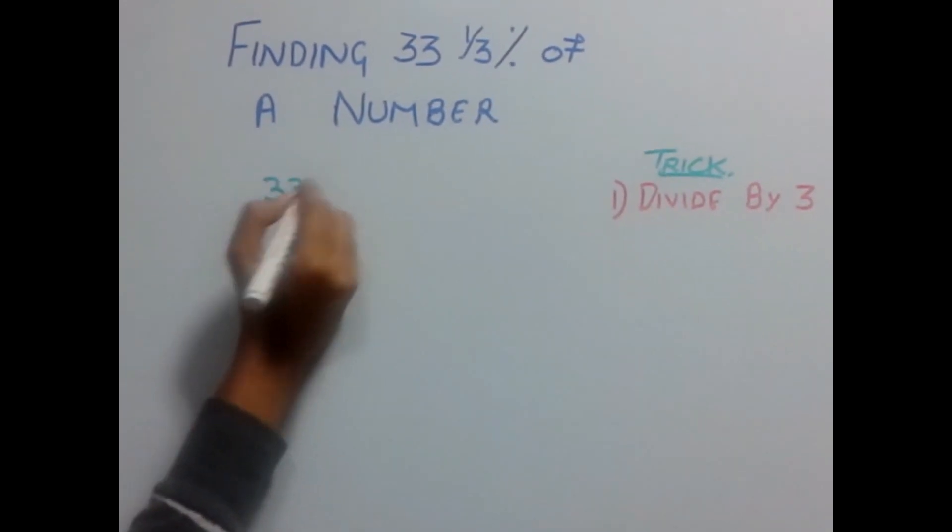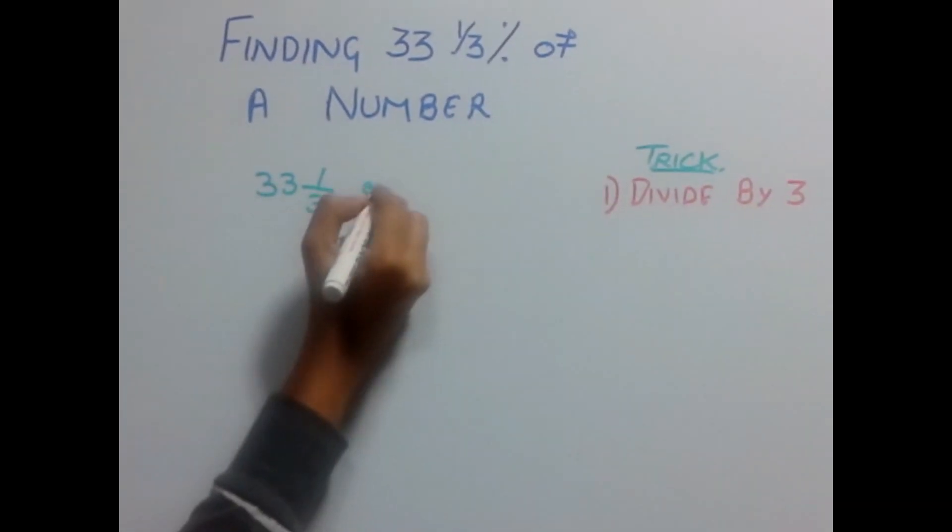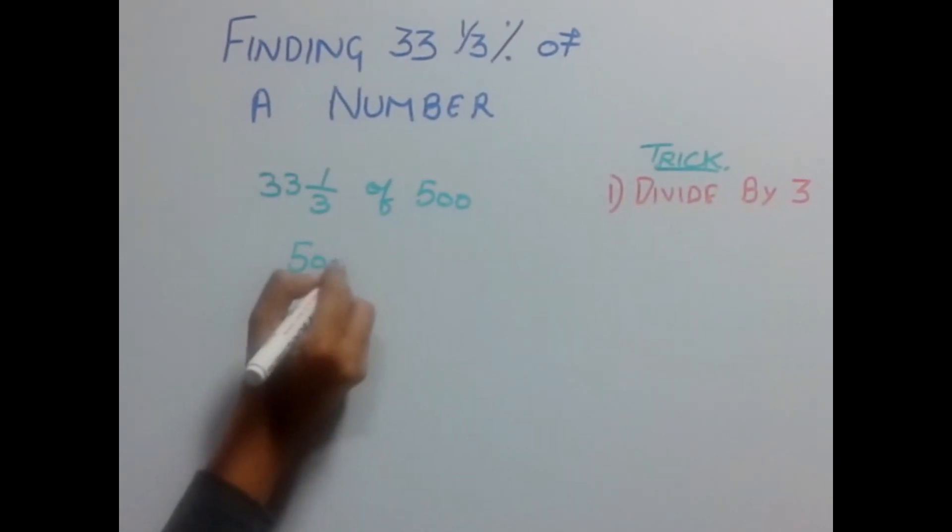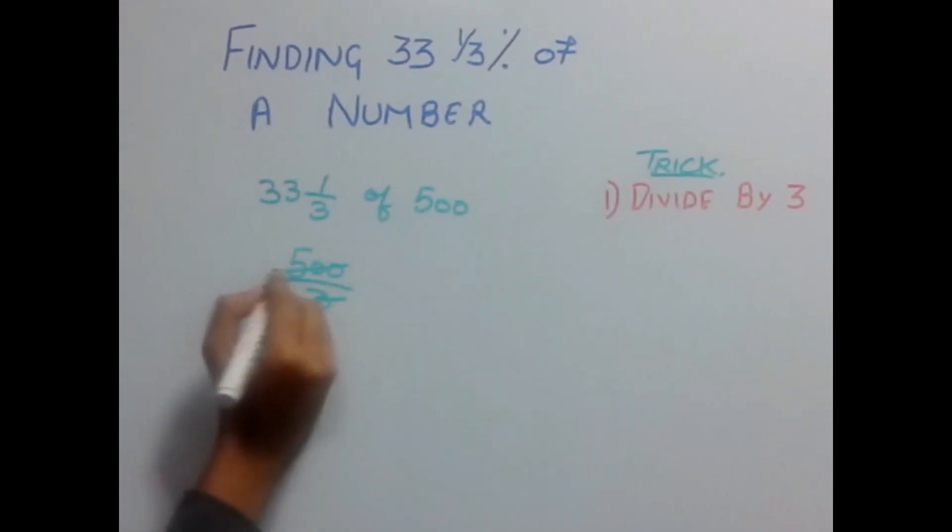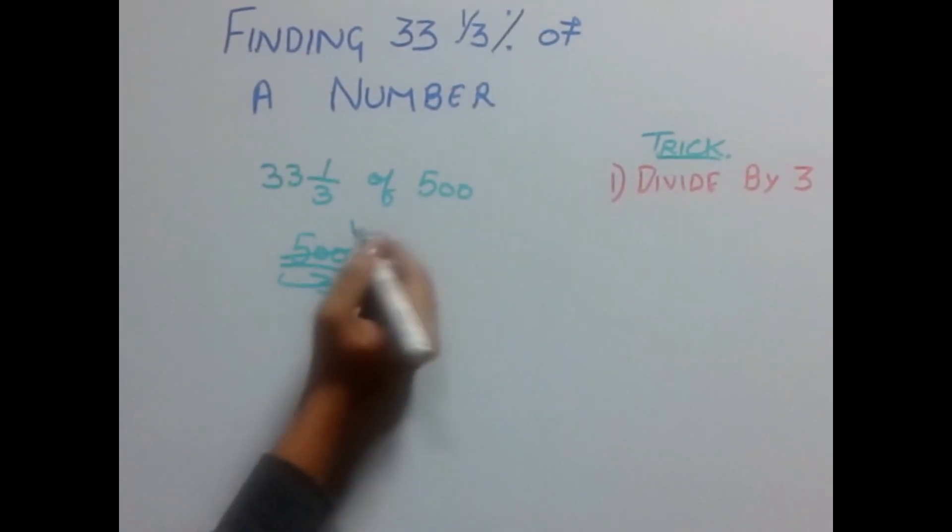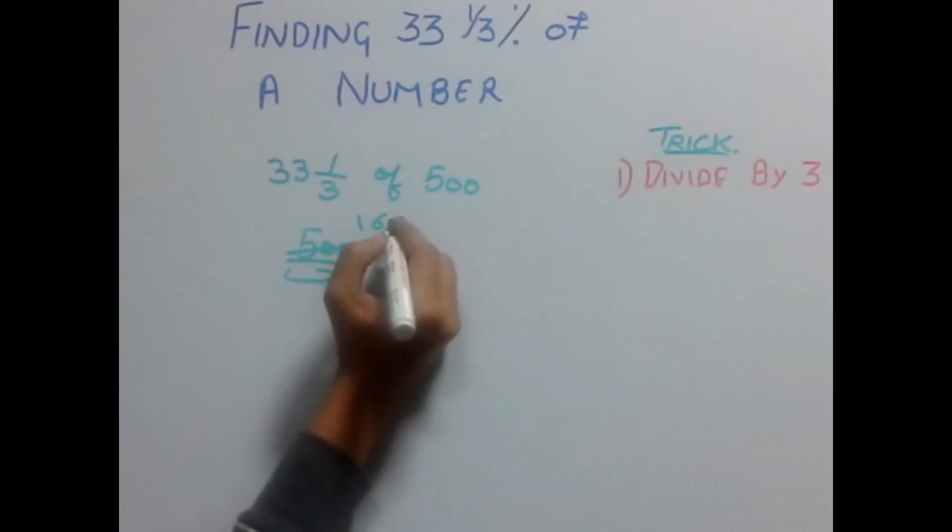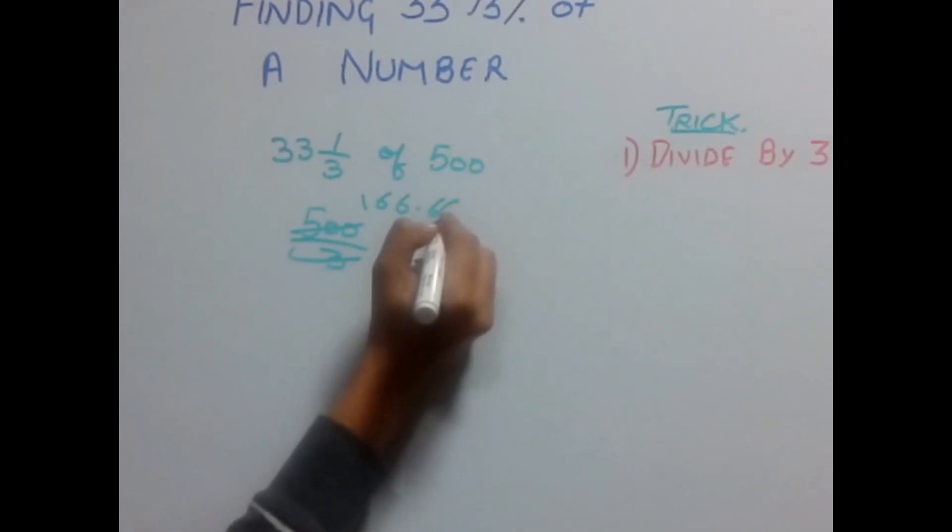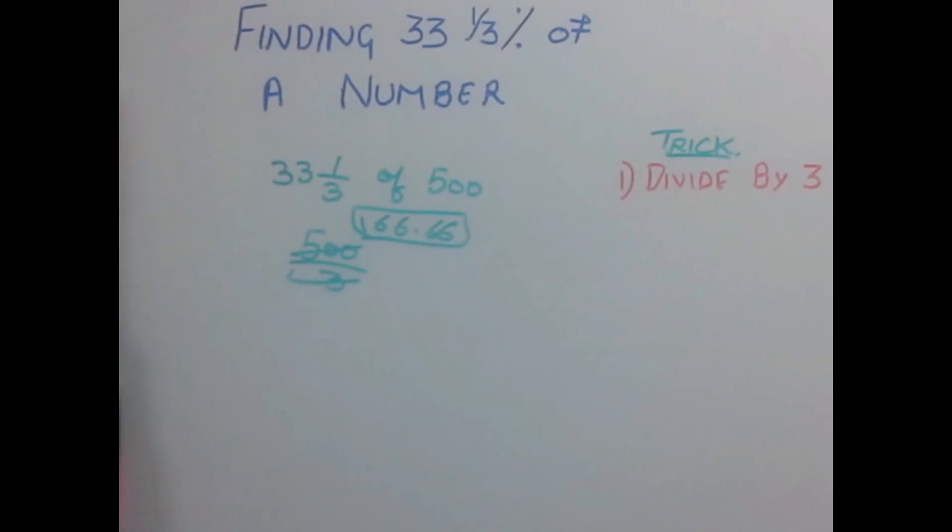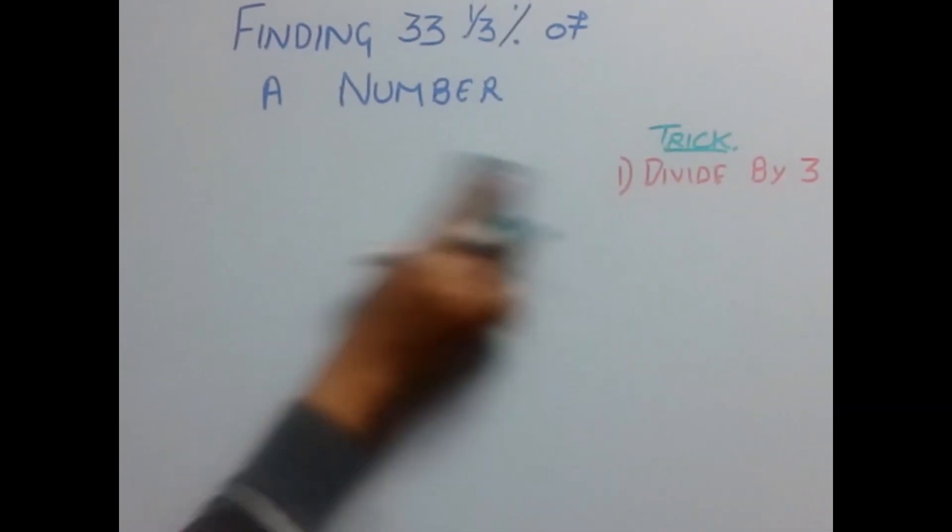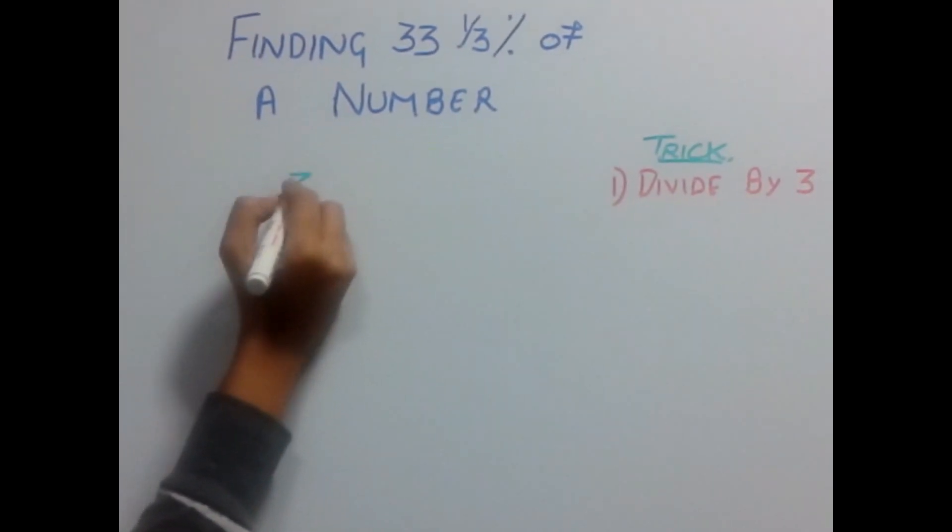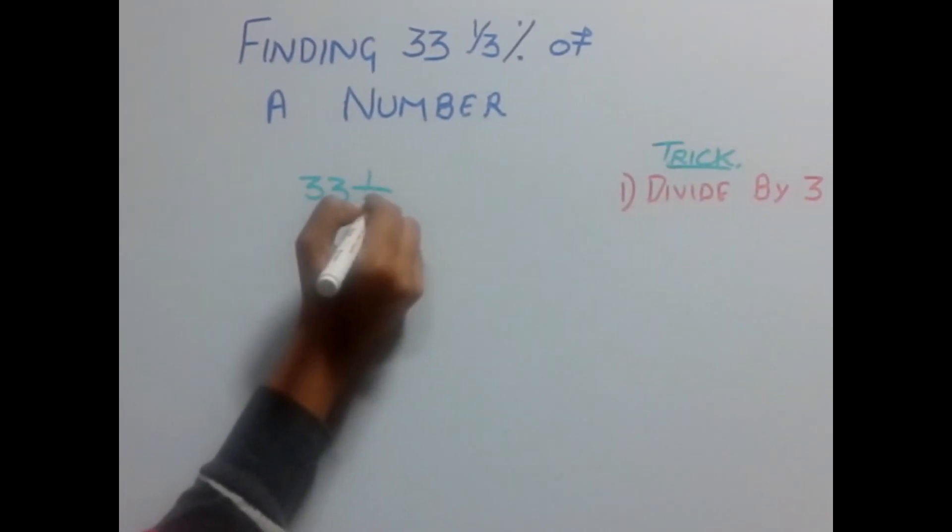Let's find out 33⅓% of 500. Simply divide 500 by 3, which gives you: 5 divided by 3 is 1, carry the remainder; 20 divided by 3 is 6 with remainder 2, continuing as 6.66, so 166.66 is the answer. Simple! Let's have one more example.